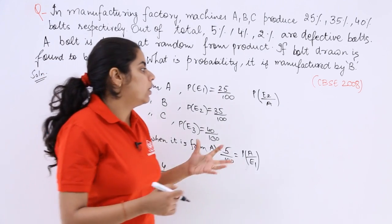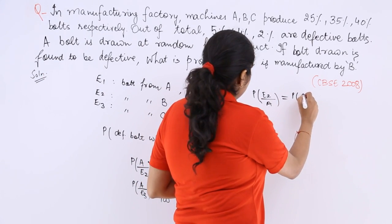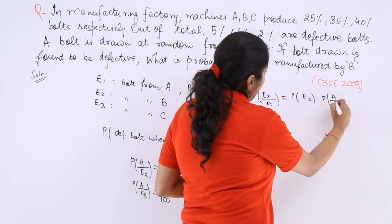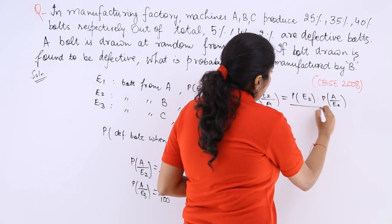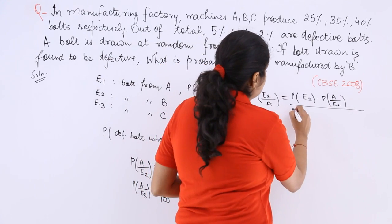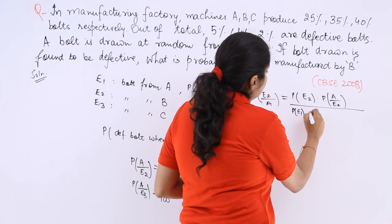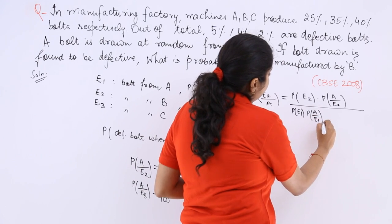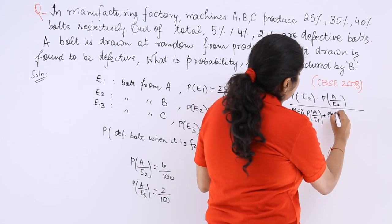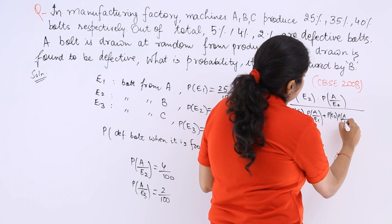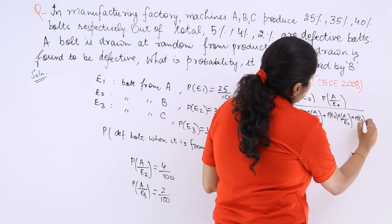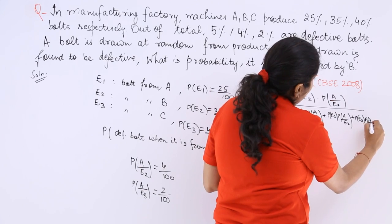Now what is the formula? It should be P(E2) times P(A|E2), whole denominator summation in case of Bayes' theorem. So it will be P(E1)P(A|E1) plus P(E2)P(A|E2) plus P(E3)P(A|E3).